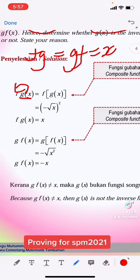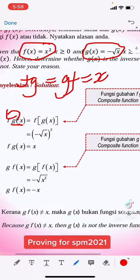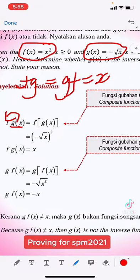we will get the f is this, this is a function right? So we sub this one into there, so we'll get the answer is negative square root with positive x.